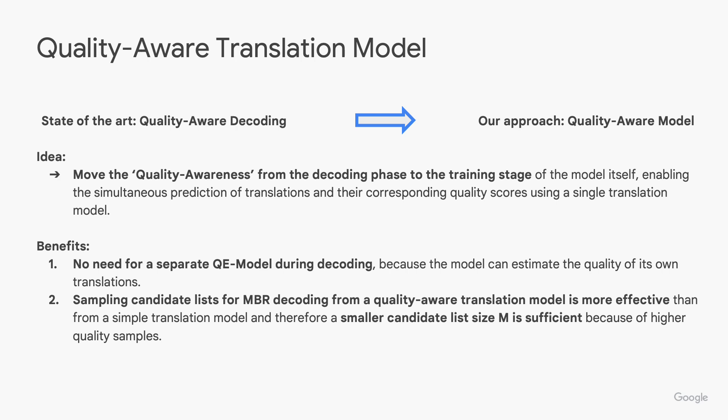Moving on to our proposed method. Our idea is to move the quality awareness from the decoding phase to the training stage of the model itself. This enables the simultaneous prediction of translations and their corresponding quality scores using a single translation model. This approach eliminates the need for a separate QE model during decoding, as the model can estimate the quality of its own translations. Sampling candidate lists for MBR decoding from a quality-aware translation model is more effective, requiring a smaller candidate list size due to the high-quality samples.